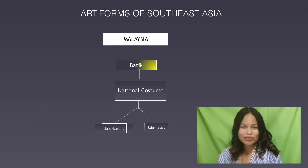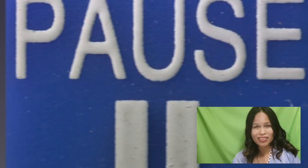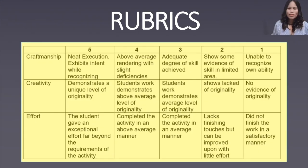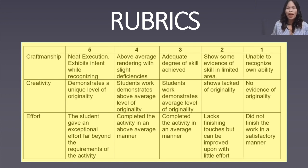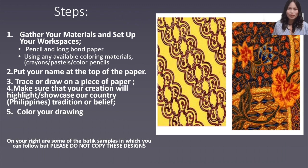Don't feel bad if you didn't get it right, because you still have time to rewind and review this presentation. Now, get inspired and enjoy your drawing project. Students, please be guided in doing your outcome based on this reference. Craftmanship: five for neat execution, four for above average, three for adequate, two for showing some evidence of skill in a limited area, and one for unable to demonstrate skill — and so on. Please take more time to read the rubrics.